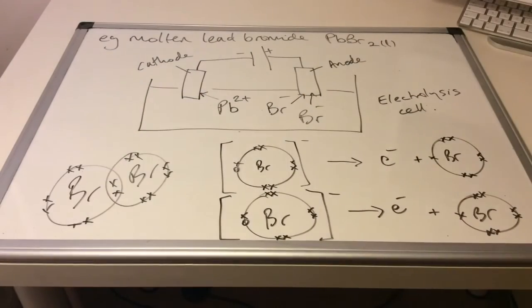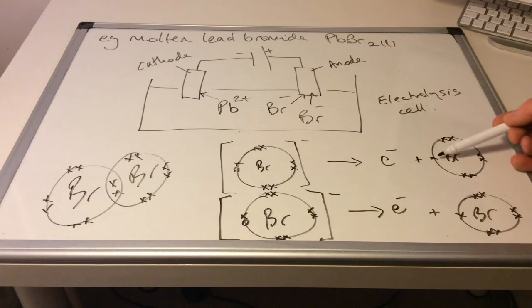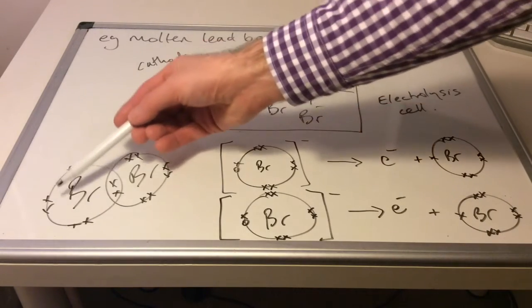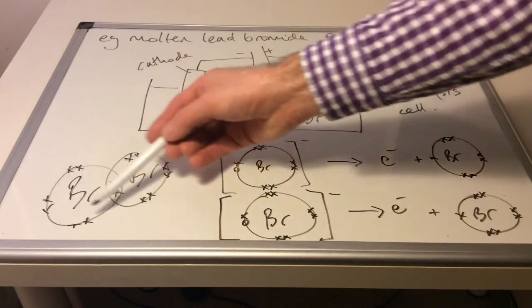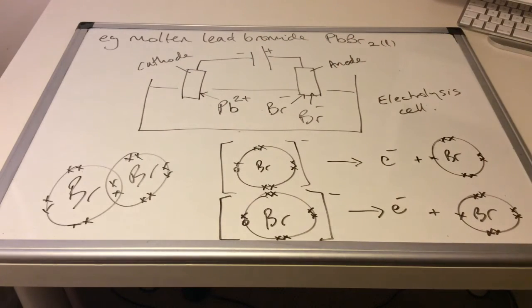What could these two isolated bromine atoms now do? And of course, they can form a covalent bond. These odd electrons, single electrons can pair up and form a bromine molecule now. So we've formed Br2.